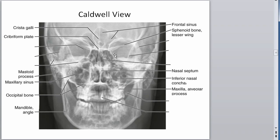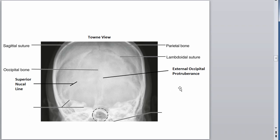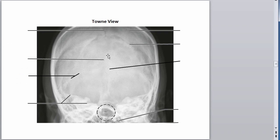It's actually called a Caldwell view. I'm not going to test you, but you will get tested on that in the future. This is more of a posterior view — you can see the EOP would be right here. A superior nuclear line is here. You can see the lambdoidal suture here. That's the superior sagittal suture. What's at the meeting point of the lambdoidal suture and the sagittal suture? That's known as the lambda. Make sure you know those things.